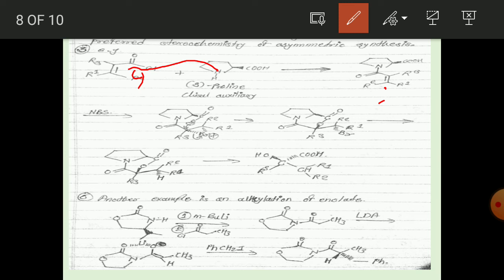In the next step, the COOH group present in the chiral auxiliary attacks and opens the bromonium ring. Then a C=O bond is formed, and bromine is removed. Finally, the chiral auxiliary is lost, giving the desired asymmetric product.